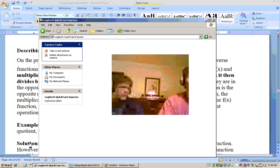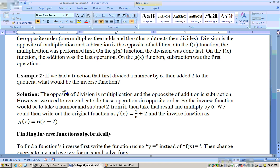Here's a problem. If we had a function that first divided a number by 6, then added 2 to that, what would be the inverse of that? Taking the number, subtracting by 2, and multiplying by 6. Right.